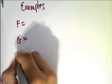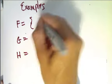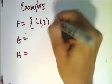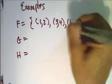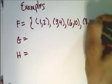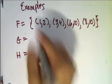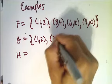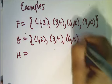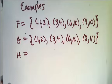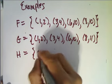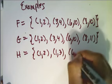Let's illustrate this with a set of examples. I'm going to list three sets of ordered pairs and see if we can identify the properties of each. F is the set containing: (1,2), (3,4), (6,10), (8,10). G is the set containing: (1,2), (3,4), (6,10), and (8,11). And H is the set containing: (1,2), (1,3), and (6,10).